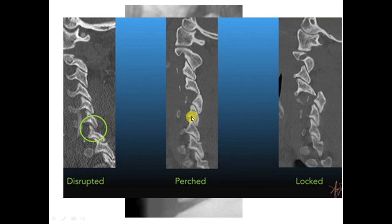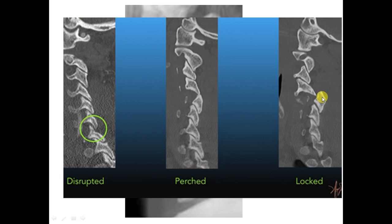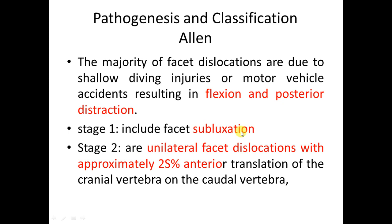There may be mild subluxation, or when the tip of the inferior articular process of the superior vertebra is at the tip of the superior articular process of the lower vertebra, this is called a perched facet. If frankly dislocated anteriorly, this is a locked facet. This distinction is important: if you see a locked facet on X-ray in the ER, you must reduce it — first converting the locked facet into a perched facet, then completing the reduction. In a locked facet, the inferior articular process of the superior vertebra is completely reversed in position.